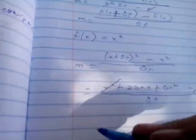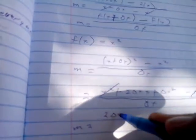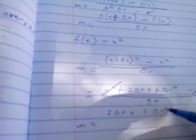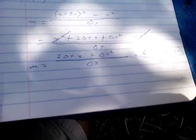These x squares will just cancel out. Now, you're left with m equals two delta x x plus delta x squared over delta x. Now, you just factor out the delta x's in here. You get two delta x times two x plus delta x over delta x.